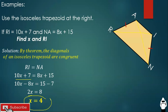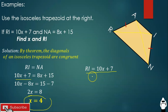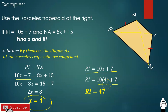The value of X is 4. Next, we solve for RI. Since RI equals 10X + 7, substituting the value of X: RI = 10 times 4 plus 7 = 40 + 7 = 47. Therefore, segment RI is equal to 47 units.